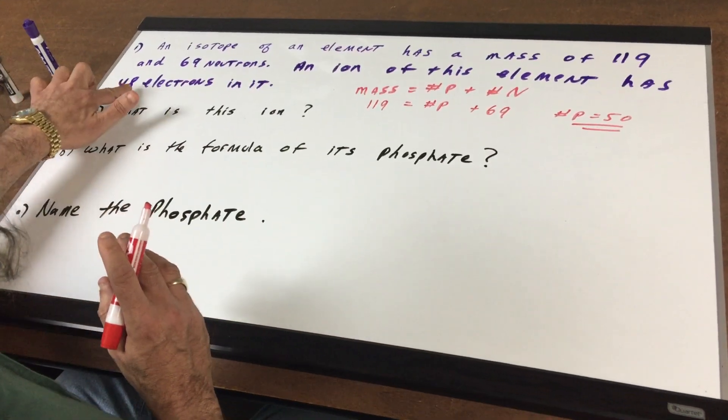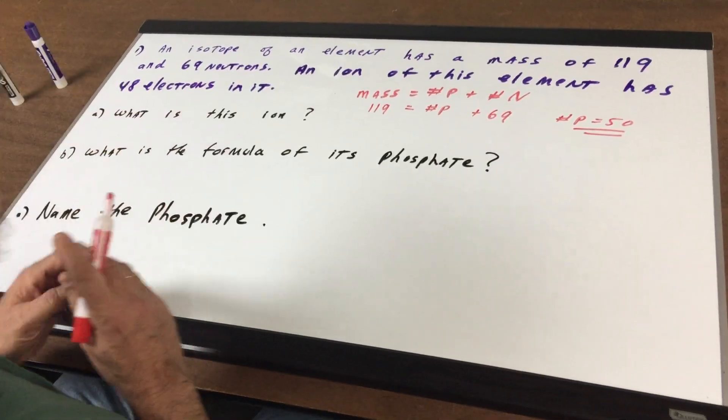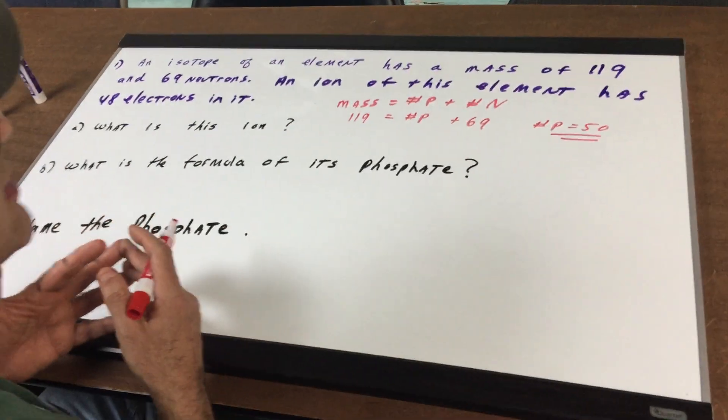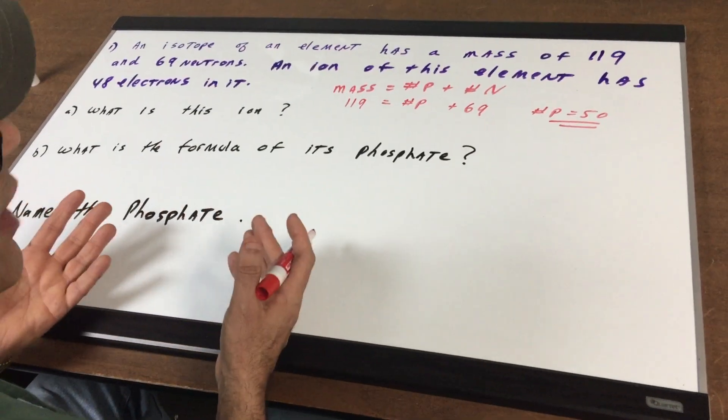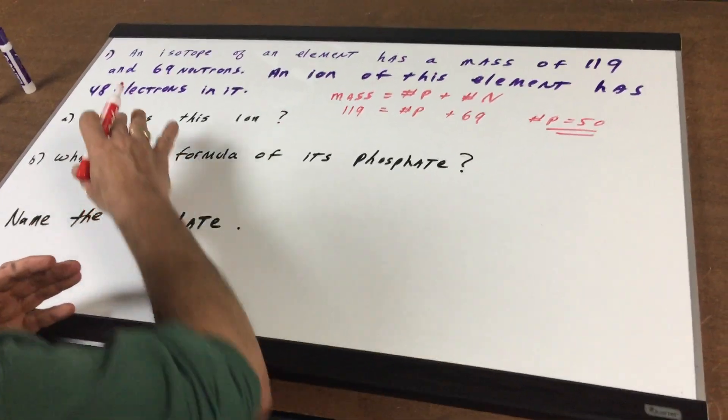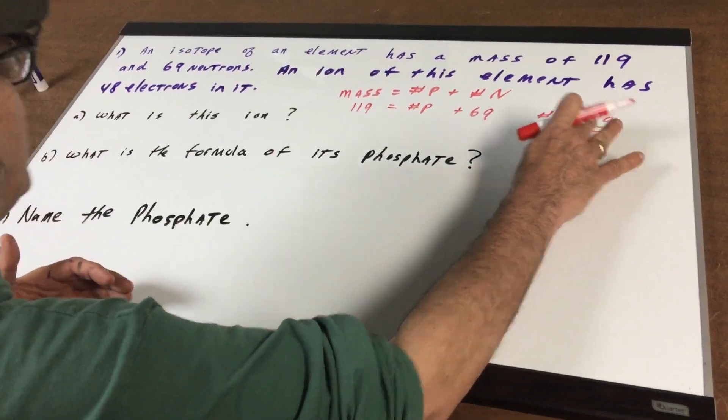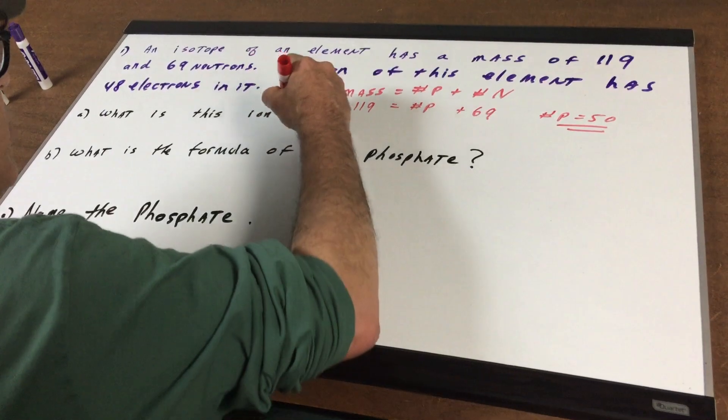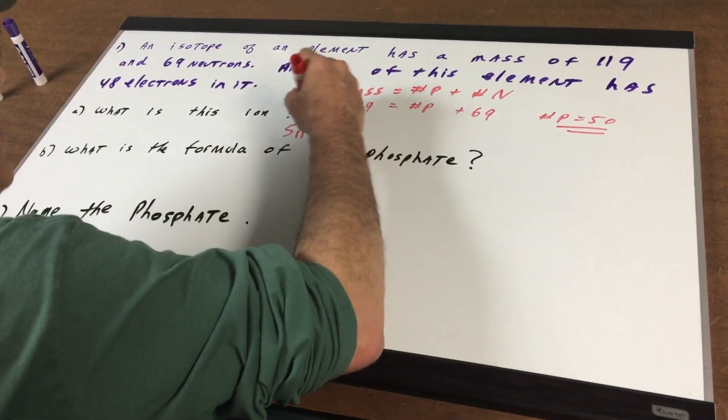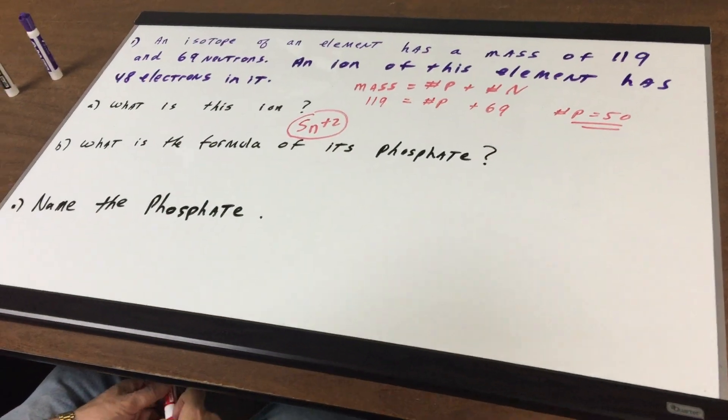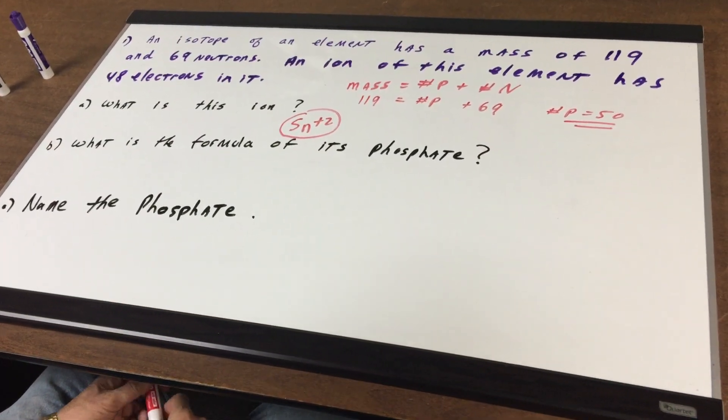Now we got to be careful. It says that this element has 48 electrons. Well we know that normally the protons equals the electrons. But if it's an ion, the protons is not going to equal the electrons which is 48. So that means that it lost 2. Therefore this element is the tin 2 ion.